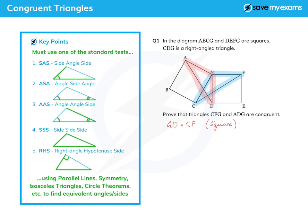And by the same logic, AG in the red triangle is going to be equal to GC in the blue triangle. And again, because they are sides of a square, and so they are the same length. So we've got two sides, two equivalent sides the same in our triangles.